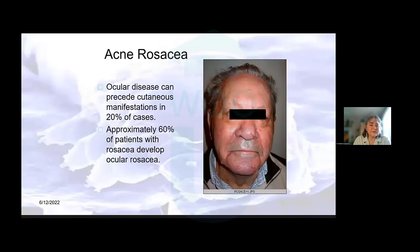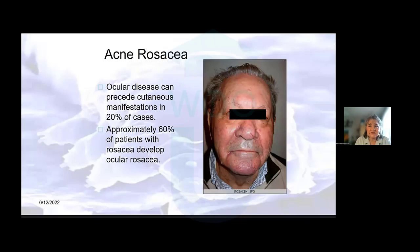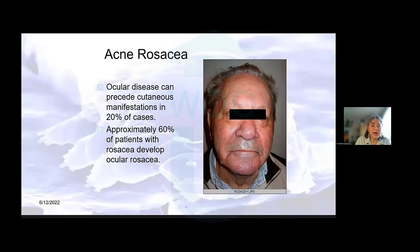We've seen a picture of acne rosacea in our previous presentation. As eye doctors, we should know that ocular disease — ocular rosacea — precedes the cutaneous manifestations in about 20% of cases, so we'll see this first. However, patients who do have obvious rosacea, and this patient has the rhinophyma and the gnathophyma of the chin — you can get similar changes on the cheek, forehead, and ears — more than half of them will go on to develop ocular rosacea.